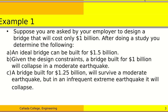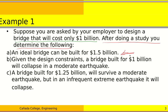The first example: you are employed by a company designing a bridge that will cost about a billion dollars. You and your team conduct a study to determine what you can achieve within this budget, and you find that the ideal bridge would actually cost 1.5 billion dollars. Within the one-billion-dollar constraint, you find that the bridge will not be able to survive a moderate earthquake.